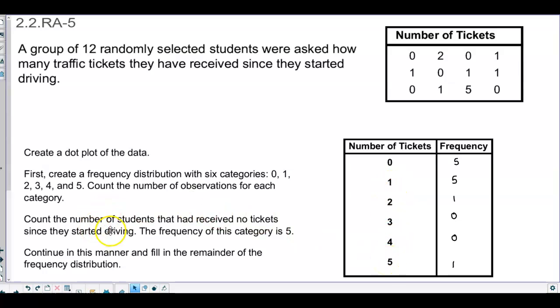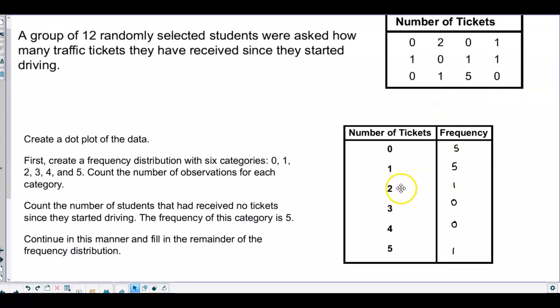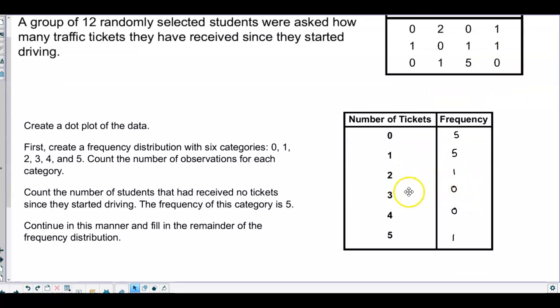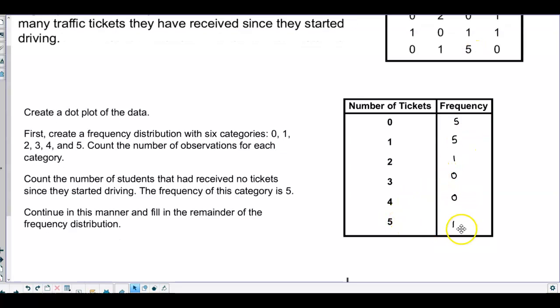And so what we're going to do is count the number of students that had received no tickets since they started driving, and the frequency of that category is five. And then how many got one? Five. How many got two tickets? One. How many got three? Zero. How many got four? Zero. And how many got five? There's one.